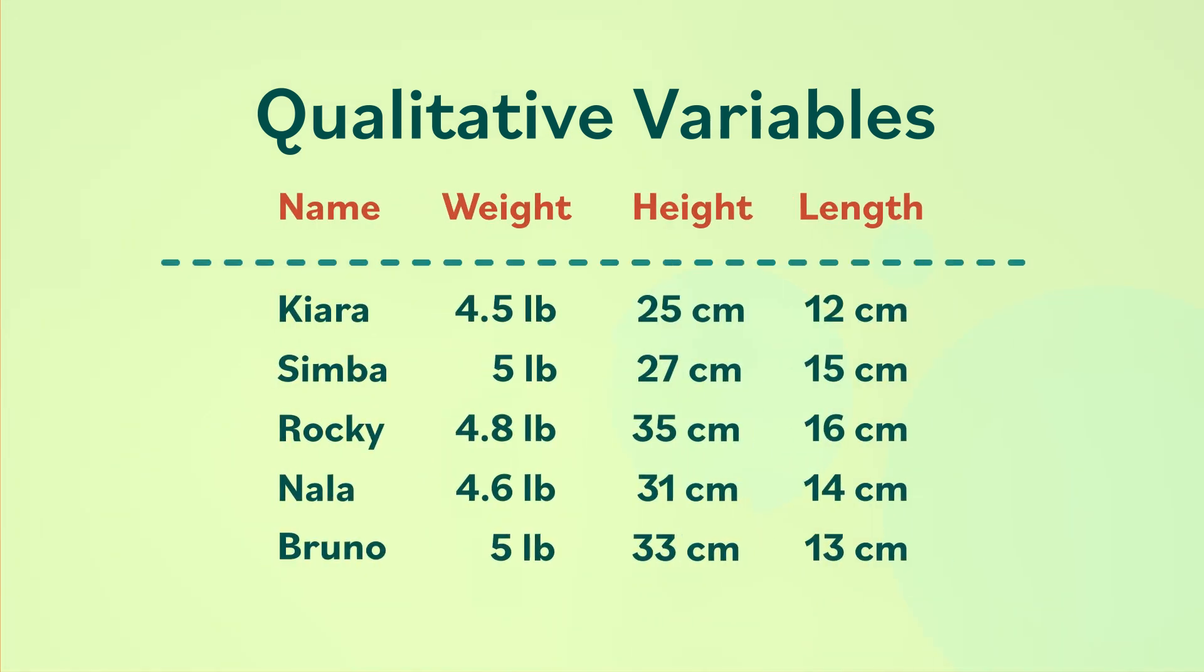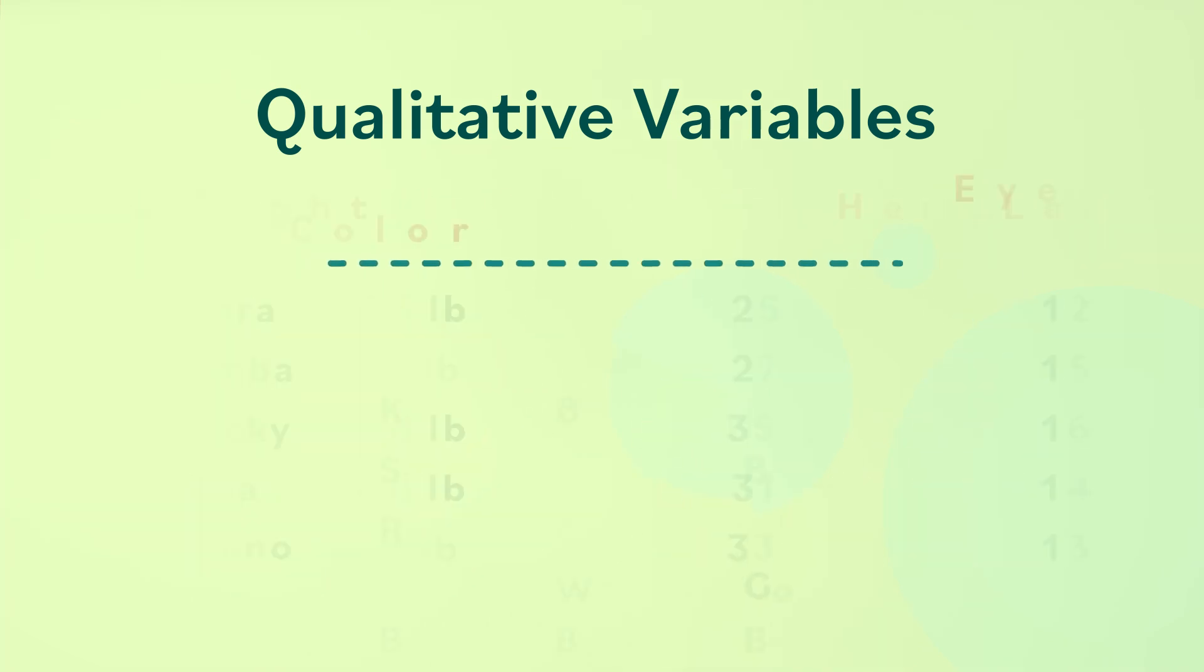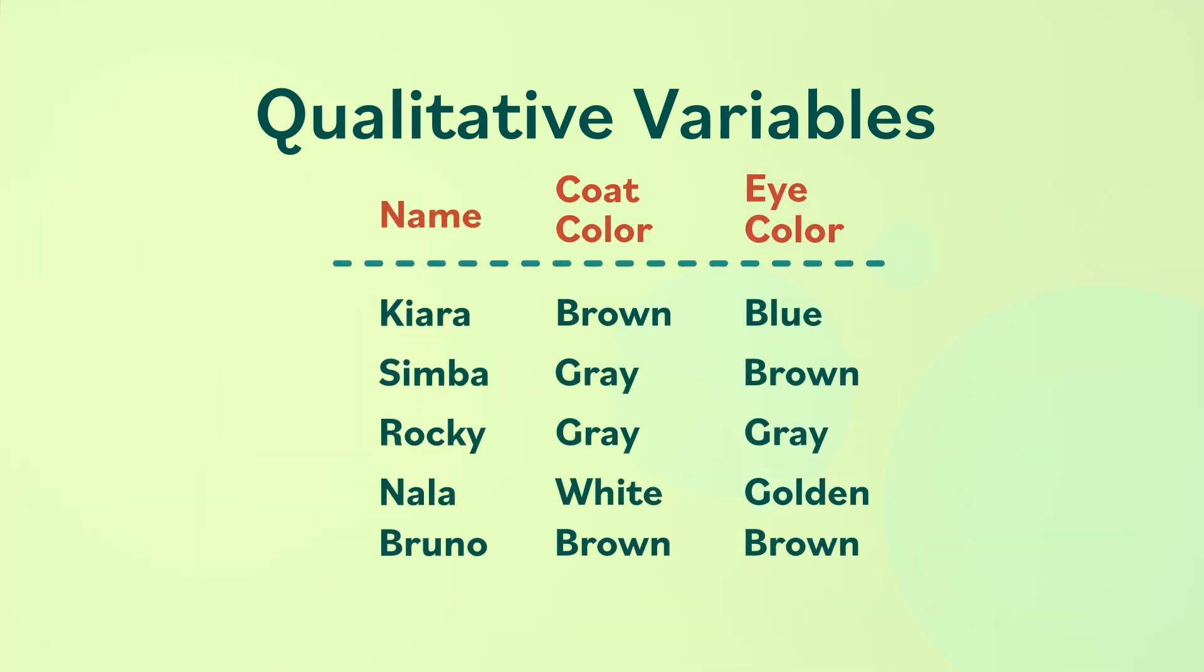If Lucas decided to replace his quantitative variables with qualitative ones, he could swap the numbers for traits like the dog's coat or eye color.